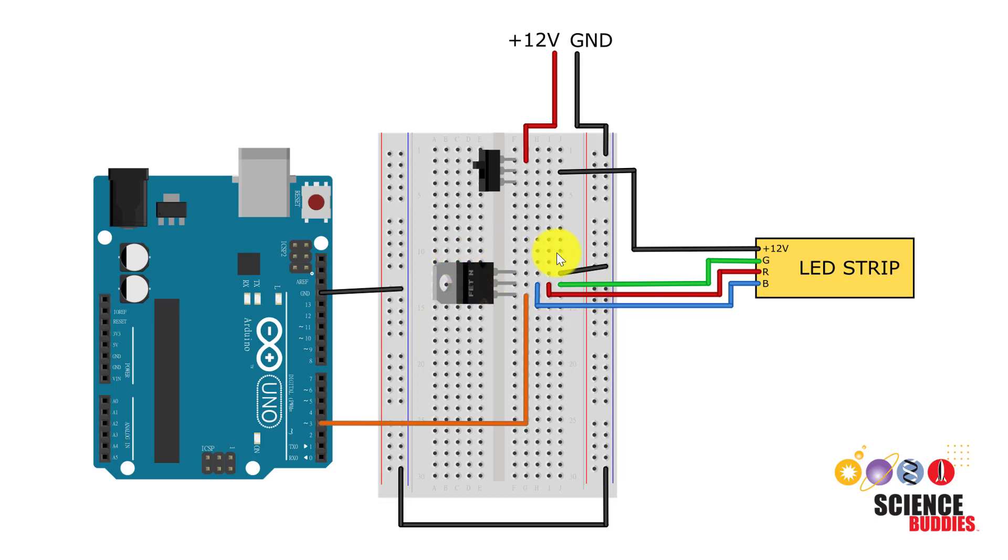MOSFETs are designed to drive high power loads like motors or really bright LED strips that can be controlled with a low power signal from a microcontroller like the Arduino. You can think of the MOSFET sort of like a control valve or a faucet that is controlling the current flowing through the LED strip using a control signal from one of the Arduino's digital IO pins. The MOSFET has three pins: the gate, drain, and source. You will need to check the datasheet for your MOSFET to make sure you know which pin is which. The gate is the control pin; that is the one connected to the output pin from the Arduino as you can see with the orange wire here.